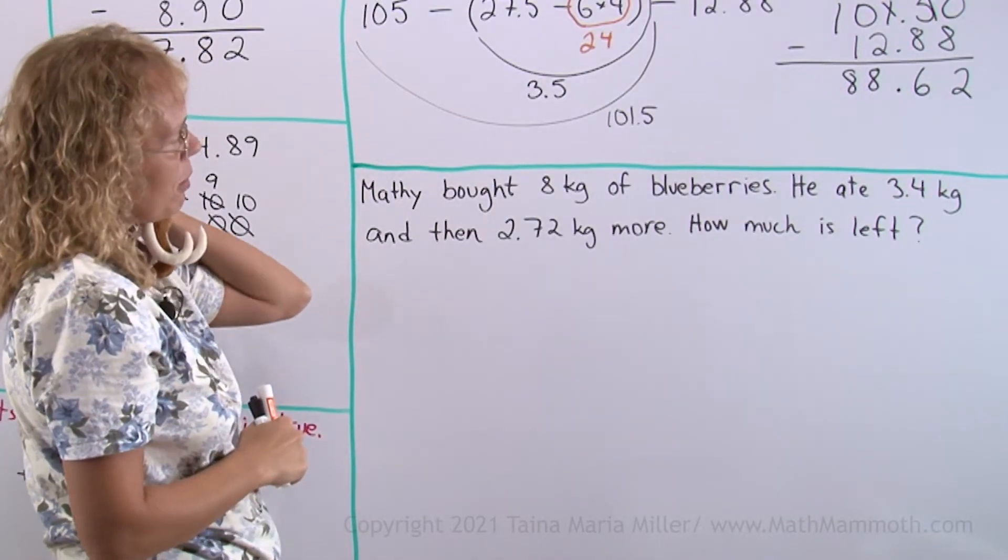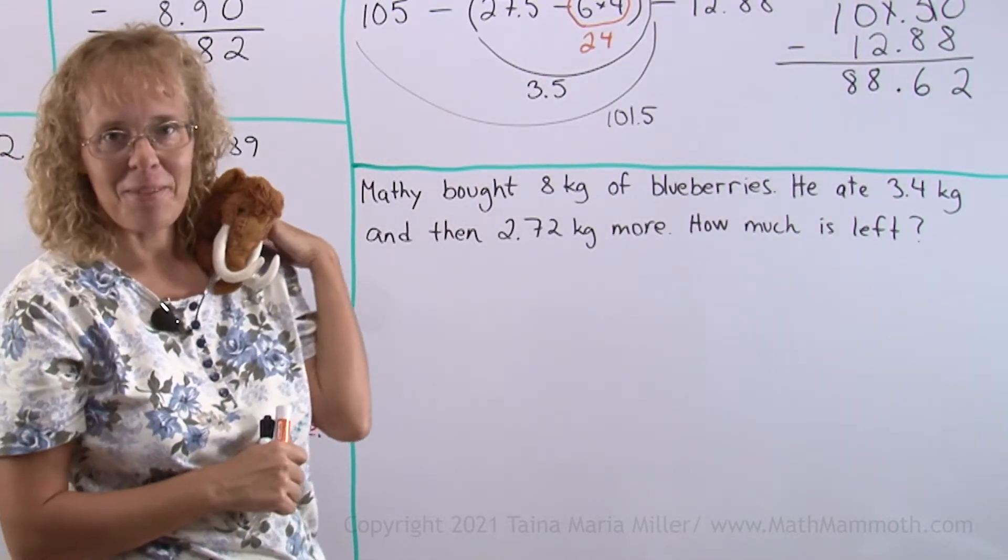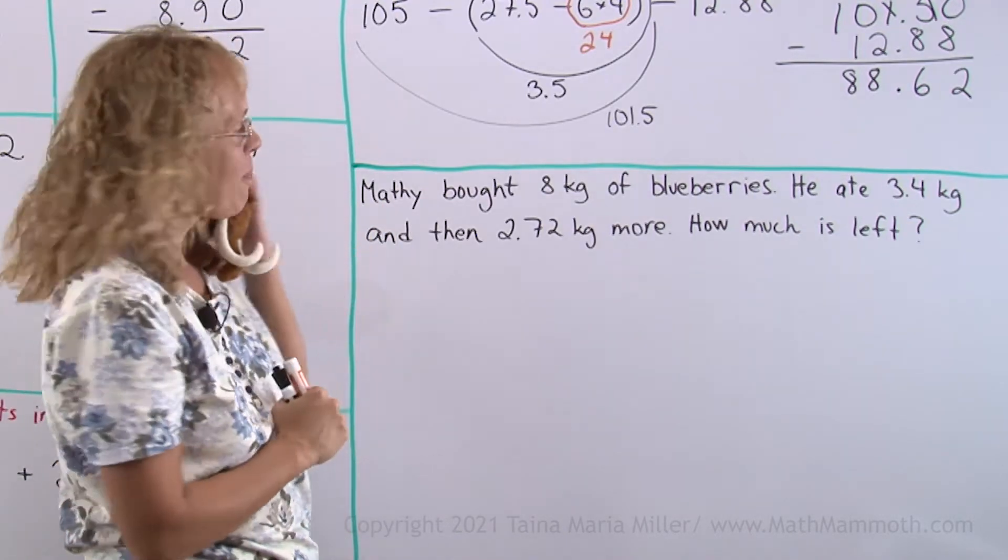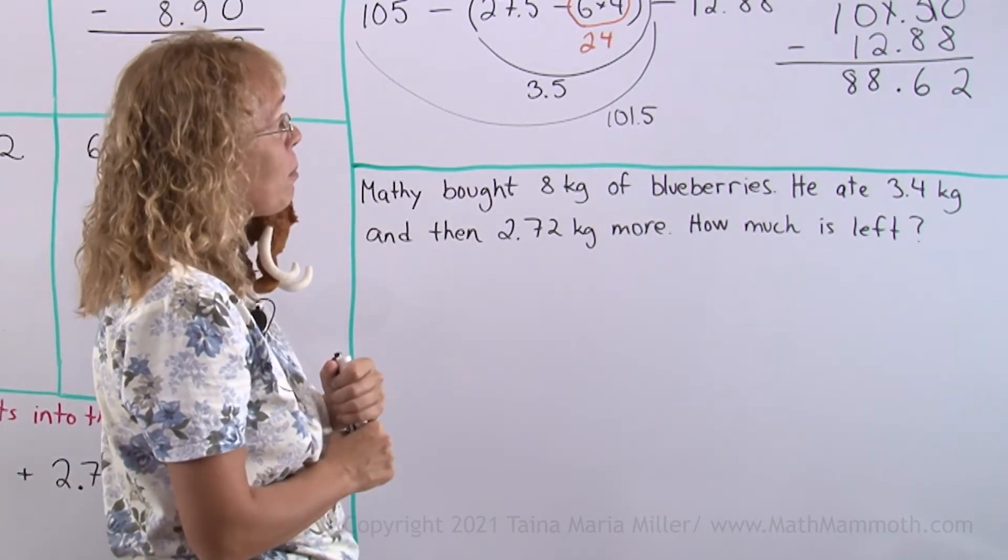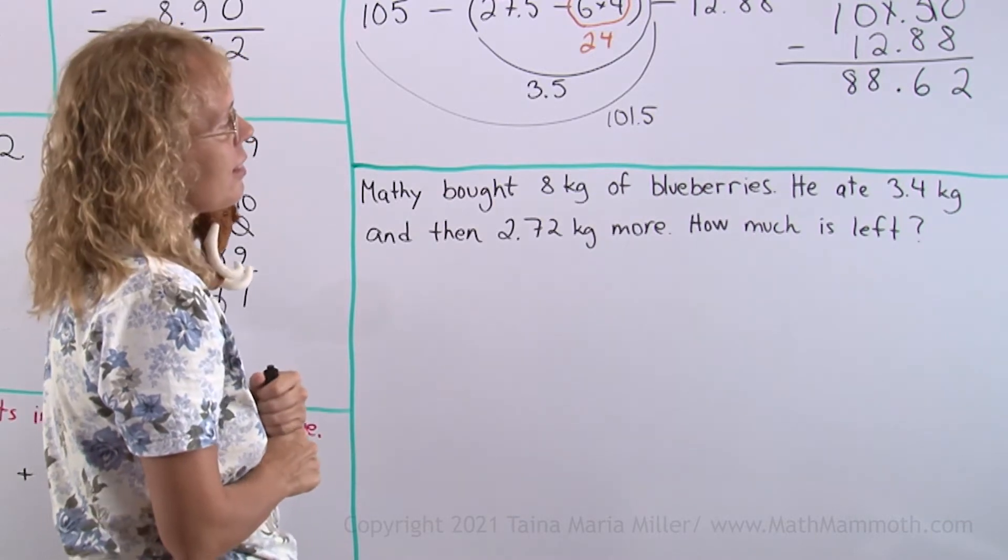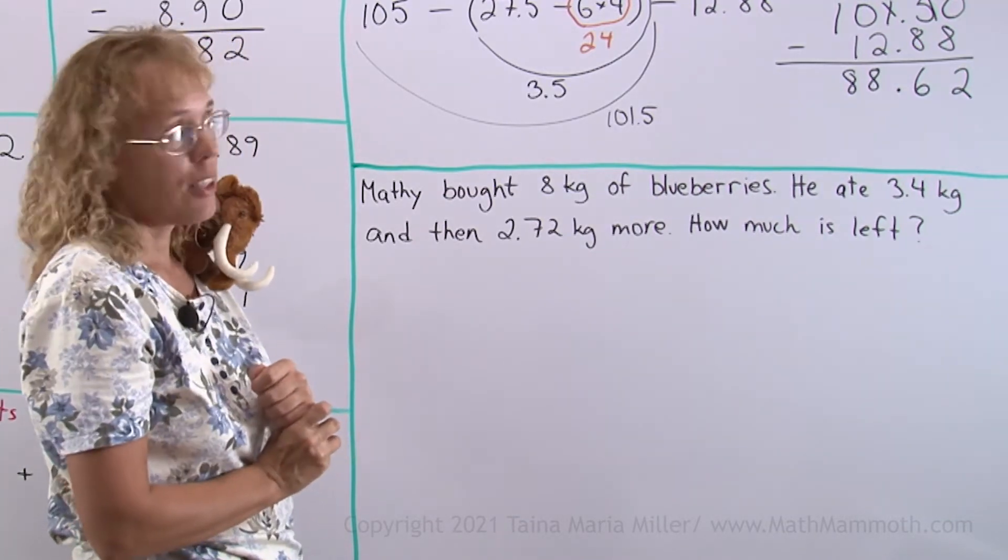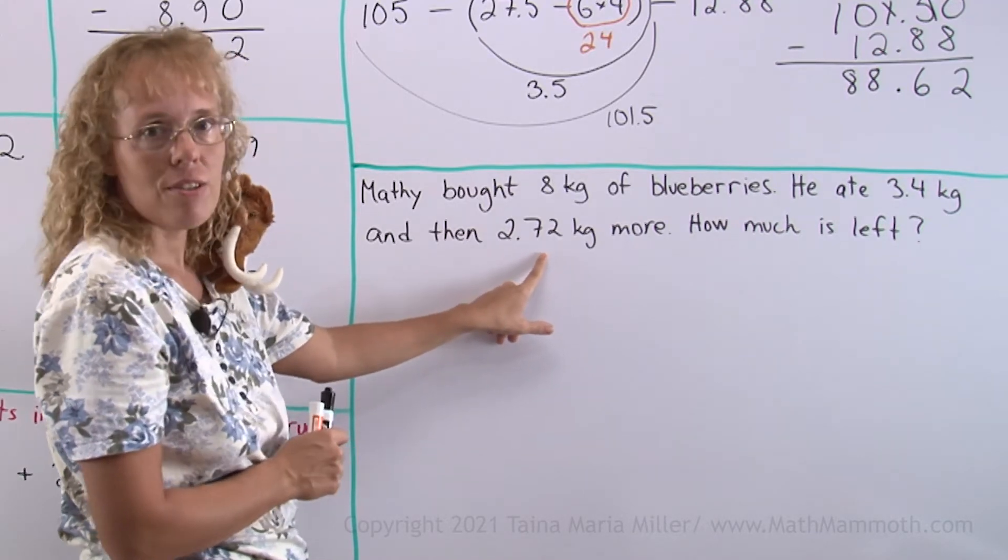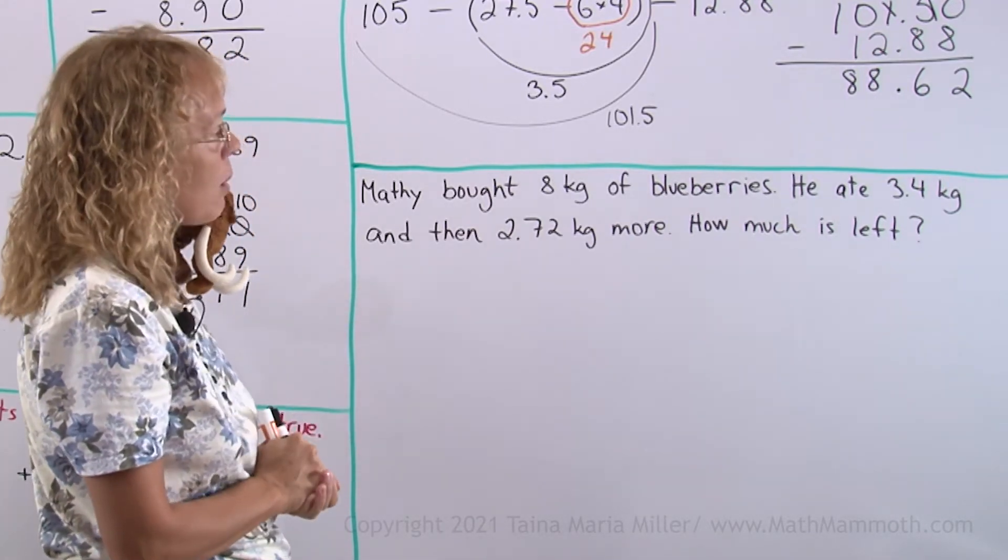Lastly, we have a word problem from Matthew. Thank you Matthew once again. It is blueberries, of course, because he loves blueberries. Matthew bought 8 kilograms of blueberries. He ate 3 kilograms and 4 tenths of a kilogram. Then he ate 2 kilograms and 72 hundredths of a kilogram more. How much is left?